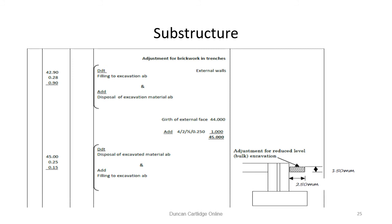Starting with the girth of the external face, 44 metres, add 4 times, twice times, half times, 250 to arrive at the mean girth.